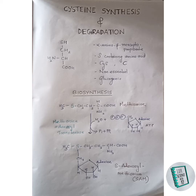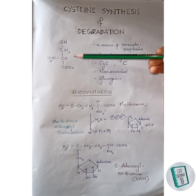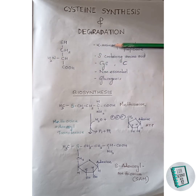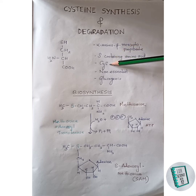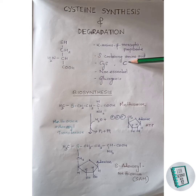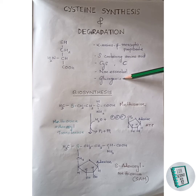Hello guys, welcome back to a video. Today we will be discussing about the synthesis of cysteine. Cysteine is a sulfur-containing amino acid. Its other name is alpha amino beta mercaptopropionate. The three-letter representation of cysteine is CYS and the one-letter representation is capital C. It is a non-essential amino acid and it is a glucogenic amino acid.